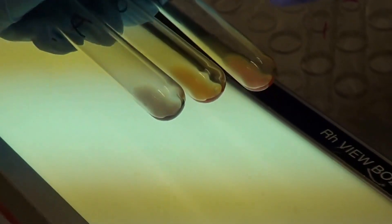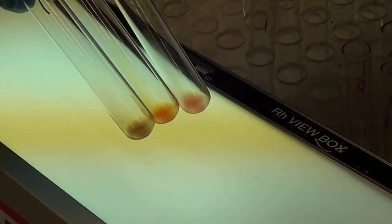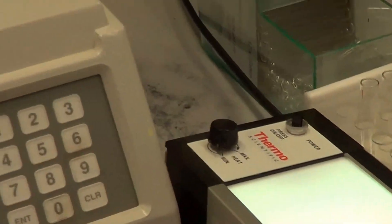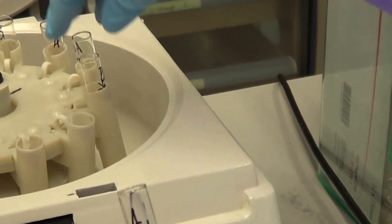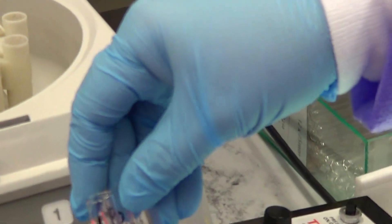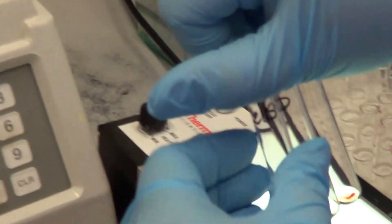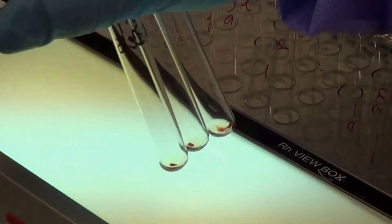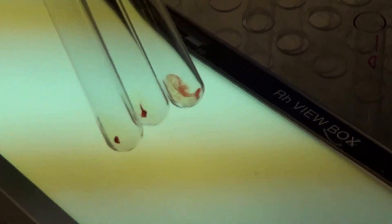To confirm your type, you perform a back type or reverse typing. If you have type O blood, the naturally occurring antibodies in your sample should be anti-A and anti-B, so those cells should agglutinate.